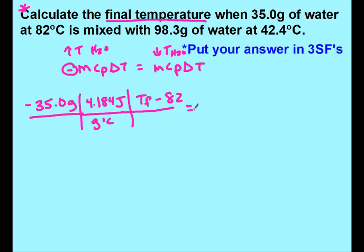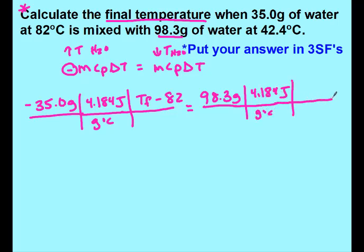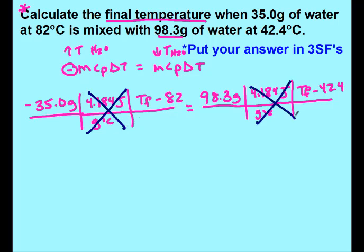On the right, the water at the lower temperature: 98.3 grams, still 4.184 J/g·°C, and it's final minus initial where my initial is 42.4. Because we have water on both sides, this problem is a little bit easier — I can actually cancel both specific heats since they're the exact same number on both sides.